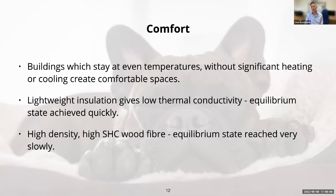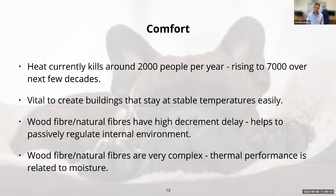Currently heat kills around 2,000 people a year and that's expected to rise to over 7,000 over the next few decades. The way we're insulating our buildings and the amount of time we're spending inside them is creating a situation where when it does get really hot, people are dying from too much heat. It is becoming ever more important that we design buildings that stay at a stable temperature without needing loads of energy to do so.